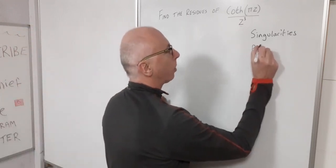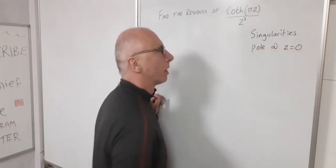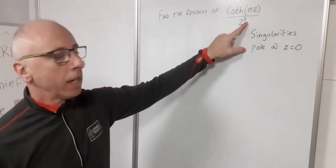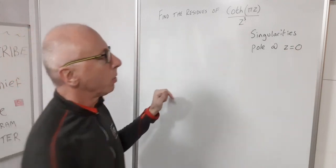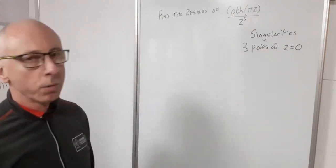So we'll have a pole at z equals zero. Now as it's z cubed there will be three poles. So there's three poles at z equals zero.